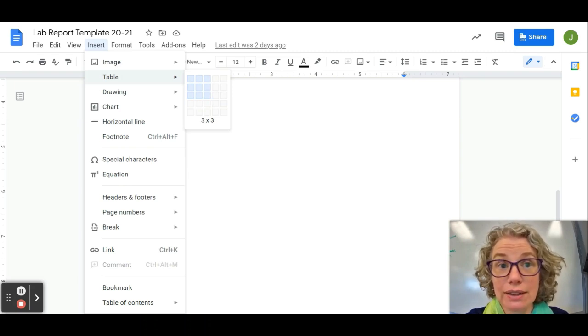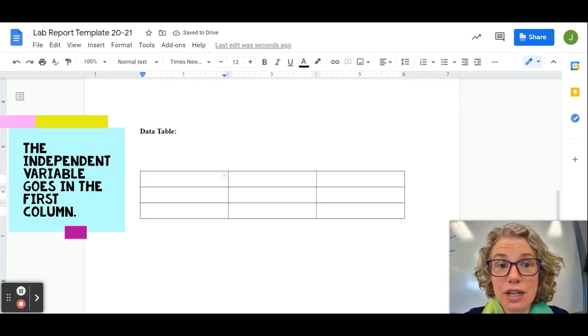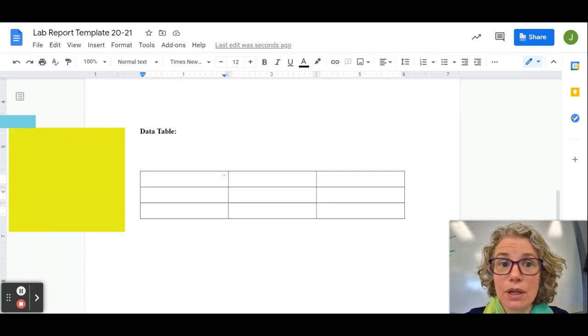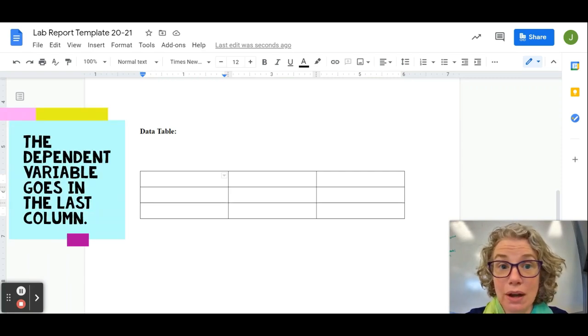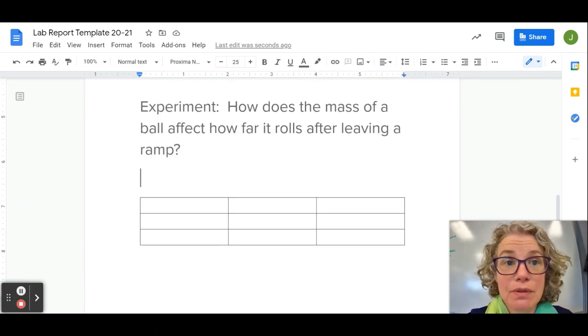Let's pick three by three to start. This first column is almost always going to be your independent variable, and then usually the last column is your dependent variable. If there's something to calculate or additional information that needs to be recorded, it goes in the middle spots. If this was the experiment I wanted to make a data table for, my independent variable that I am changing is the mass.